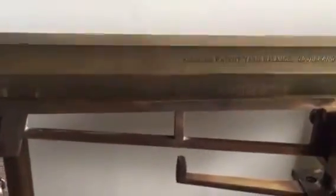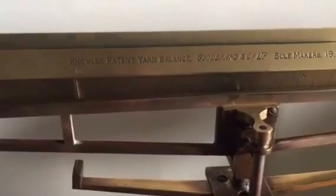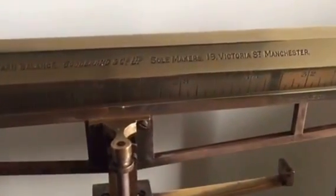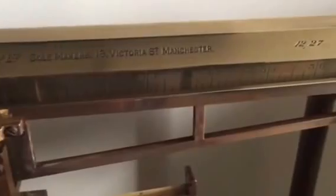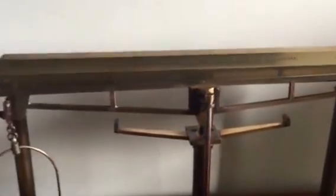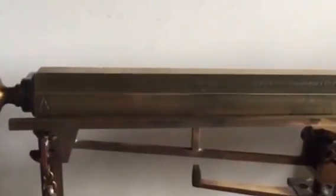I'll just show you the description. It says it's an Oldknow and Yarn Balance, Goodbrand, sole makers Victoria Street Manchester, and I think that date at the end is 1927. The interesting thing about this is that it is rather more than a standard balance.